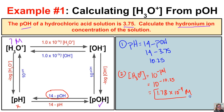So if we have a hydrochloric acid solution whose pOH is 3.75, the hydronium ion concentration is going to be 1.78×10⁻⁴ moles per liter. Let's take a look at another example.